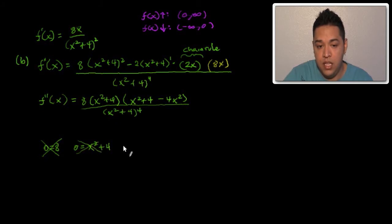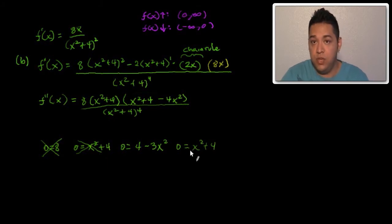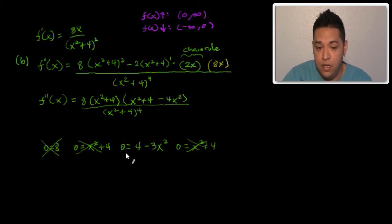We do need to set the remaining factor equal to zero: 4 minus 3x², because the like terms combine to give negative 3x². Setting the denominator equal to zero gives a complex answer as well, so we really only need to worry about the factor 4 minus 3x² in the numerator.